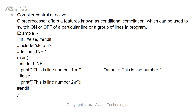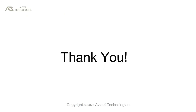Inside the main function: #ifdef LINE, printf("This is line number one"), #else, printf("This is line number two"), #endif. The output of the program is "This is line number one" because the name LINE is replaced by 1 in the preprocessor stage, and hence it will print "This is line number one".